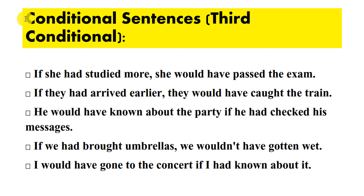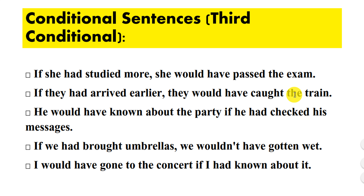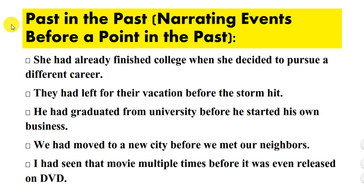The past perfect tense is used in conditional sentences — the third conditional sentences. For example: if she had studied more, she would have passed the exam; if they had arrived earlier, they would have caught the train; he would have known about the party if he had checked his messages.